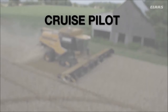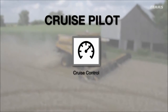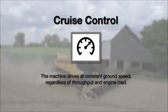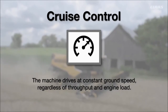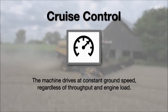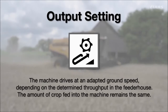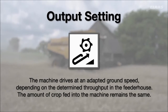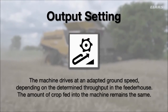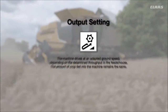Your CruisePilot features three travel modes: cruise control, output, and throughput. The cruise control setting allows your machine to drive at a constant ground speed, regardless of throughput and engine load. The output setting ensures your machine drives at an adapted ground speed depending on the determined throughput in the feeder house. The amount of crop fed into your machine will remain the same.